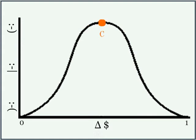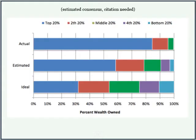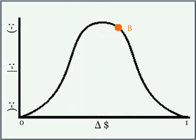However, a perfect society is idealistic and unobtainable. An optimal economy will have well-balanced socioeconomic classes. Some people will have a lot less and some people will have a lot more, but most people will have enough wealth that most people are happy. This distribution of wealth is represented by point A and point B. Point A represents the poorest people, while point B represents the richest people. The upper and lower middle classes are in between. This is the optimal position for a well-balanced economy.